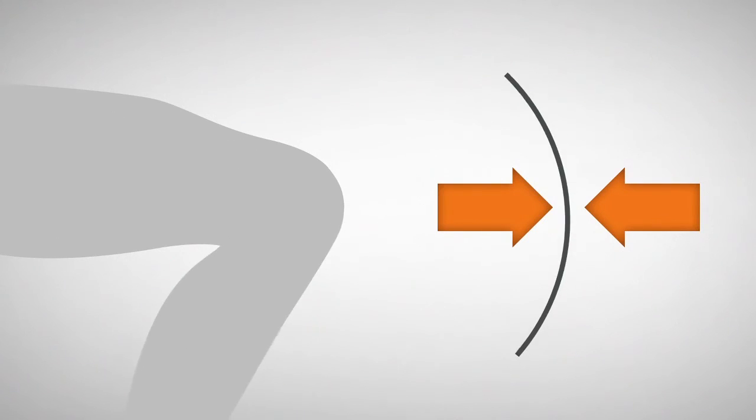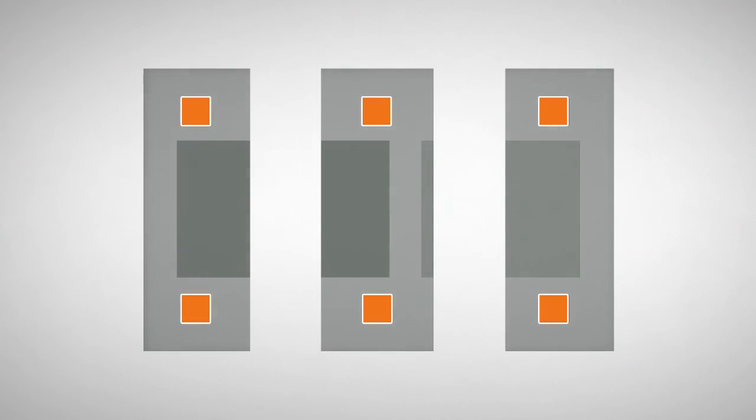Thin the silicon down so it flexes, so thin that it can match the flexibility of the body. Embed these tiny silicon chips into ultra-thin layers of a flexible polymer.